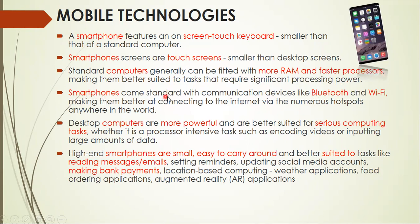Smartphones come standard with communication devices like Bluetooth and Wi-Fi, making them better at connecting to the internet via the numerous hotspots available anywhere in the world. Desktop computers are more powerful and are better suited for serious computing tasks, whether processor-intensive tasks such as encoding videos or inputting large amounts of data.